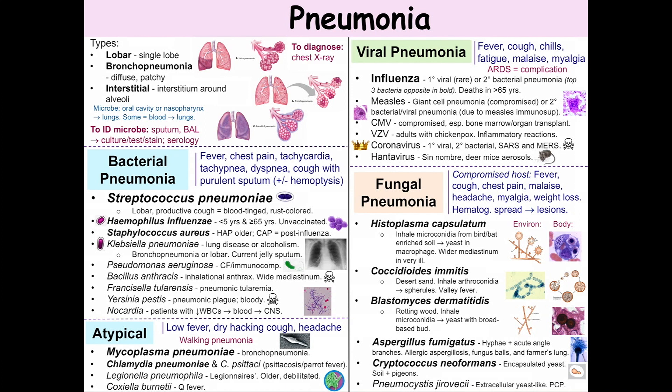There are two vaccines against Streptococcus pneumoniae. Haemophilus influenzae type B is the number two cause of bacterial pneumonia. This organism has a polyribitol phosphate capsule. There is also a vaccine for this organism.